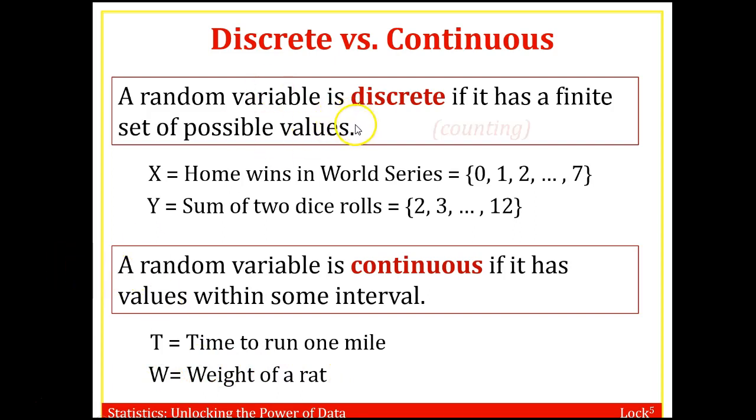I like to kind of think about this. Discrete is something you count. You count the number of home run wins. You count the number of dice that land when you throw to paradise. So counting, discrete, you count. And continuous is measure. So how would you measure the weight of a rat? You put it on a scale. How would you figure out the time to run each mile? Well, you'd measure it. You'd have a timer, figure out how long it took you to run.